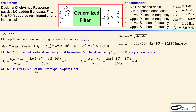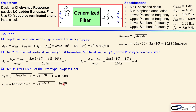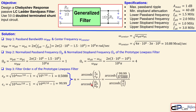Step 3 is the filter order calculation. For the prototype low-pass filter, we use the formula for ε_P using A_max = 1 dB, giving 0.5088. ε_S is related to the minimum attenuation of 40 dB, giving approximately 99.99, almost 100. Using the Chebyshev order formula with arc-cosh of (ε_S / ε_P) over arc-cosh of (Ω_S / Ω_P = 4), we get 2.8951. A second order filter is not sufficient, so we go up to third order: N = 3.